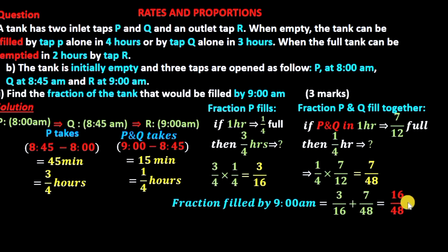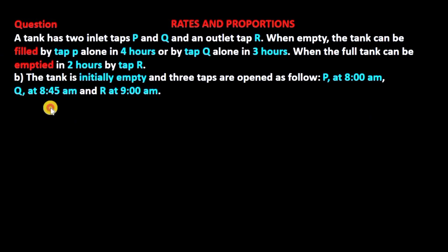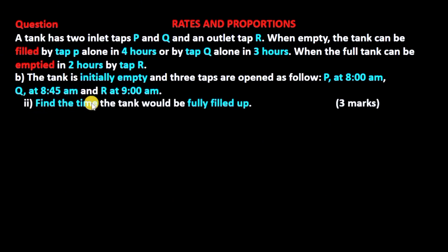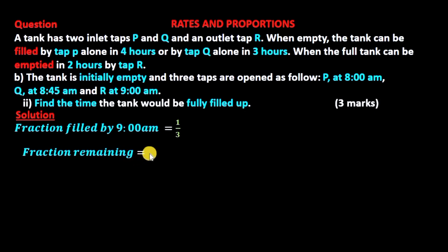16 over 48 simplified is a third. So the fraction of the tank filled by 9 a.m. is one third. The fraction remaining to be filled is 1 minus a third, which gives 2 thirds.